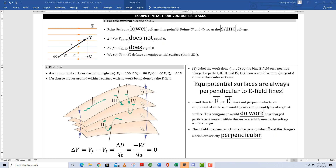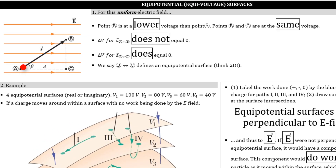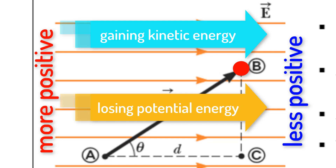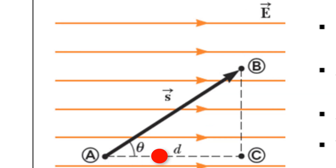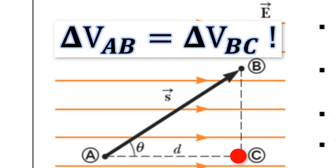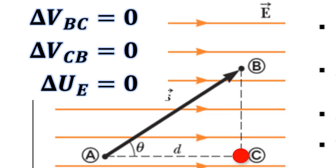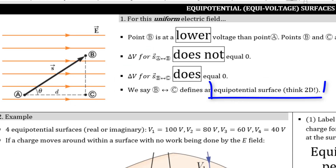Next section: equal potential or equal voltage surfaces. If Probert moves from point A to point B, there is a voltage drop. The more positive region is on the left side and the less positive region is on the right side. Since Probert is a positive unit test charge, there's going to be a lowering of electrostatic potential energy. If Probert moves from point A to point C, there's also the same voltage drop, because the electric field lines are uniform. If Probert goes from point C to point B or vice versa, there's no change, because the proximity to the more or less positive charge regions is not changing. So we say points B and C represent an equal potential surface.